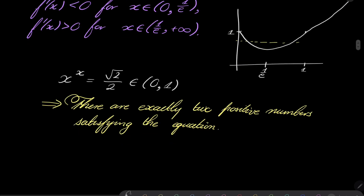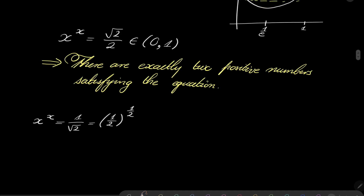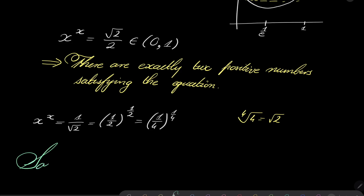How can we find them? The easiest way is to guess. Notice that square root of 2 over 2 can be written as 1 over square root of 2, and 1 over square root of 2 is 1 half to the power of 1 half. So one solution is x equals 1 half. But also notice that 1 half to the power 1 half can be written as the fourth root of 4, which equals the square root of 2. So our two solutions are x equals 1 fourth and x equals 1 half.